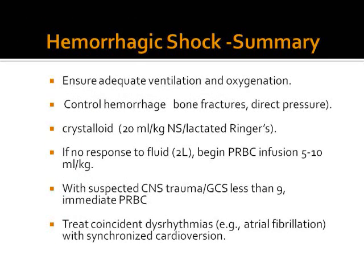In summary, regarding hemorrhagic shock, we must ensure the patient has adequate ventilation and oxygenation, control hemorrhage by checking and splinting long bone fractures and applying direct pressure to any bleeding points. We give crystalloids at a rate of 20 mls per kg — normal saline or Ringer's lactate. If there is no response, we must group and cross-match and give blood, and treat arrhythmias with synchronized cardioversion early.